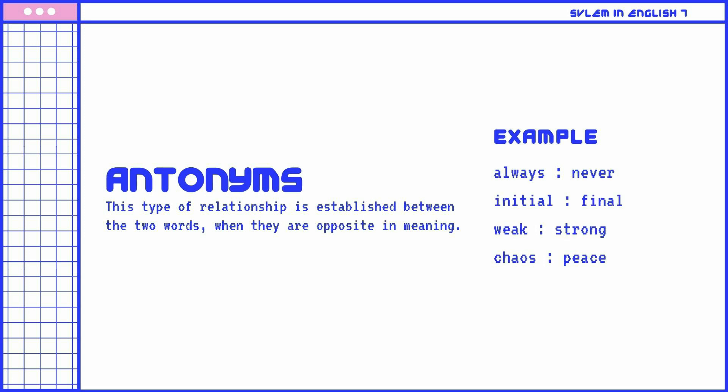Antonyms: This type of relationship is established between two words when they are opposite in meaning. Examples: Always is to never. Initial is to final. Weak is to strong. Chaos is to peace.